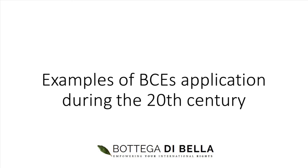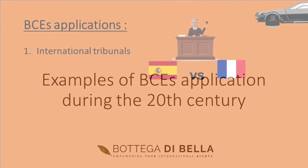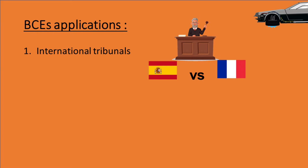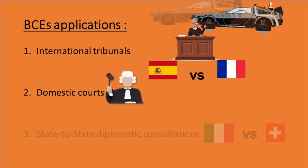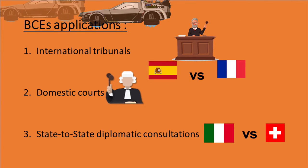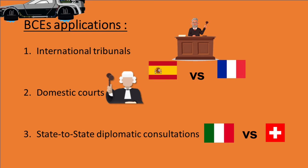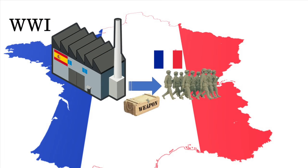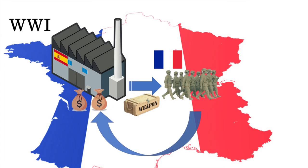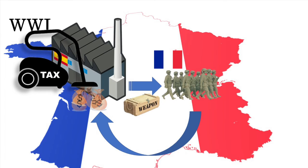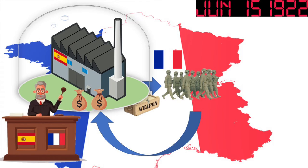Examples of BCEs' application during the 20th century. On several occasions, BCEs have been interpreted and applied by international tribunals, domestic courts, and also in state-to-state diplomatic consultations. For instance, in 1922, in the War Profits Tax Arbitration between France and Spain, the sole arbitrator was called to apply the 1862 France-Spain BCE to determine whether Spanish nationals in France were exempt from the extraordinary excess war profits tax introduced in 1916 in response to the First World War. This tax served as a sort of war contribution and aimed at taxing exceptional profits made during the war by supplying the French army. The arbitrator concluded that such exceptional tax could not be levied on Spanish nationals established in France, by virtue of Article 42 of the 1862 France-Spain BCE.